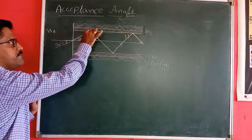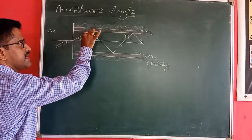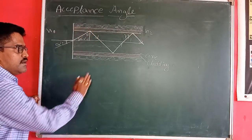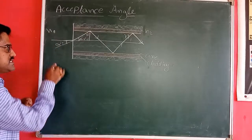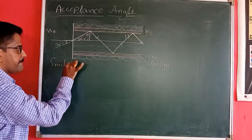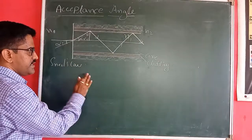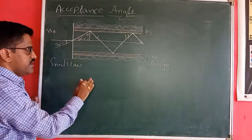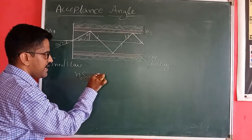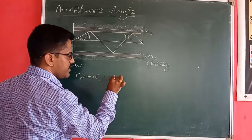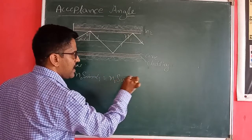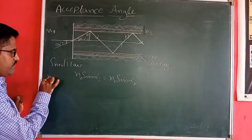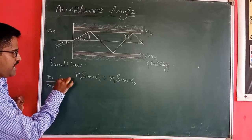Now, at the core-cladding boundary they are making some angle theta, and here the angle is 90 degrees. Using the law of refraction, we know that the light is coming from N0 and then enters into the medium N1. We can write: N0 sin(alpha_i) = N1 sin(alpha_r). The basic formula is N1/N0 = sin(i)/sin(r).